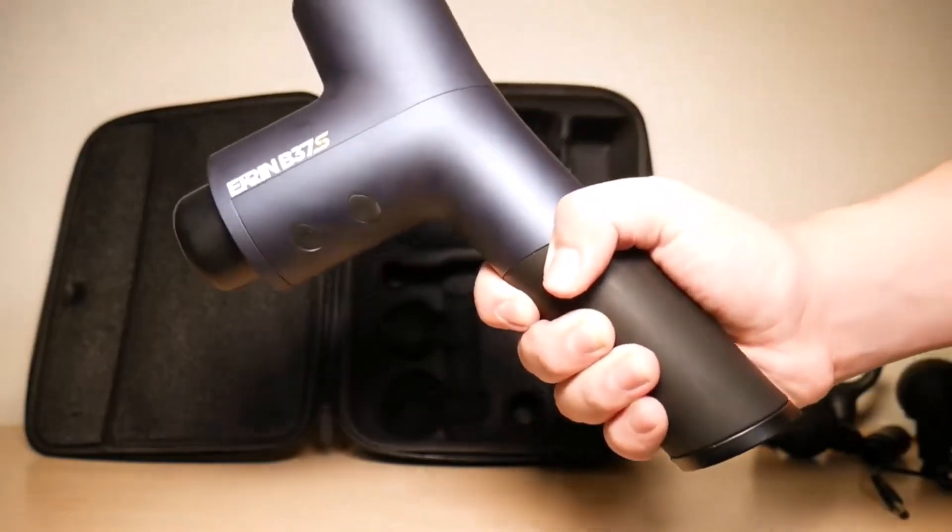The Mini retains the ergonomic handle of the original for comfortable use, despite its compact size. Its power button controls the speed and uses lights to indicate the current level. Additionally, it's Bluetooth-enabled for connection to the Therabody app. The main drawback is the lack of a battery level indicator, so you won't know when it needs recharging. For a small, powerful, and portable massage gun, the Theragun Mini is an excellent choice.